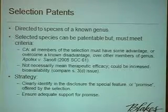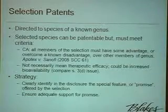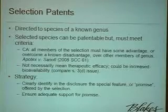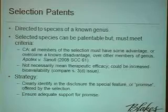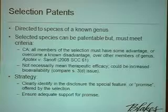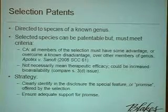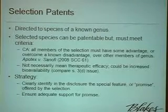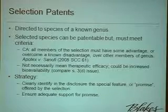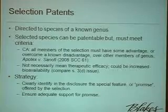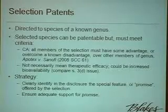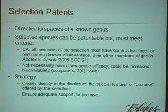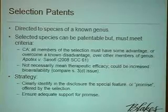Selection patents are directed to a species of a known genus — it could be one or many species. These are patentable, but they have to meet certain criteria. In Canada, we have a Supreme Court decision stipulating that in a selection, all members must have some advantage or overcome some disadvantage — some special feature over the other members of the genus. All members of that species must have that feature. It doesn't necessarily mean therapeutic efficacy; increased bioavailability, for example, would also be considered a special feature. Clearly define in the disclosure what your promise is — what is the advantage that your selection is offering — and then back it up with proper disclosure to support that promise.